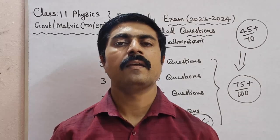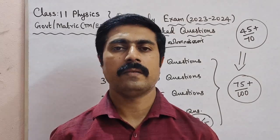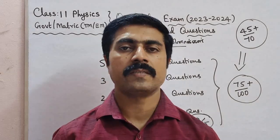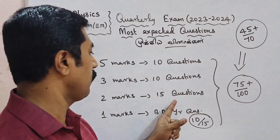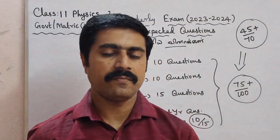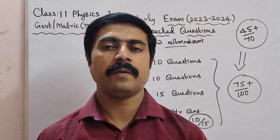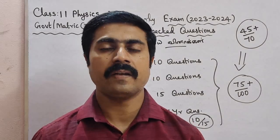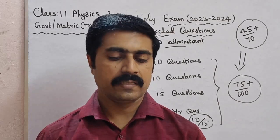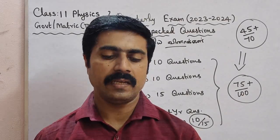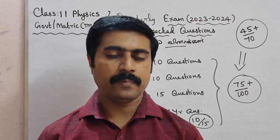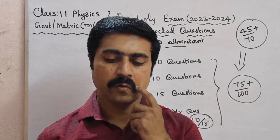So here we have three marks, next two marks. First question: what are physical quantities — what are fundamental and derived quantities? Second question: define precision and accuracy. Third question: apply the principle of homogeneity.